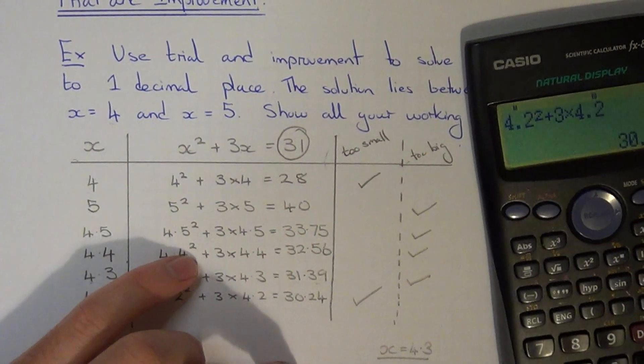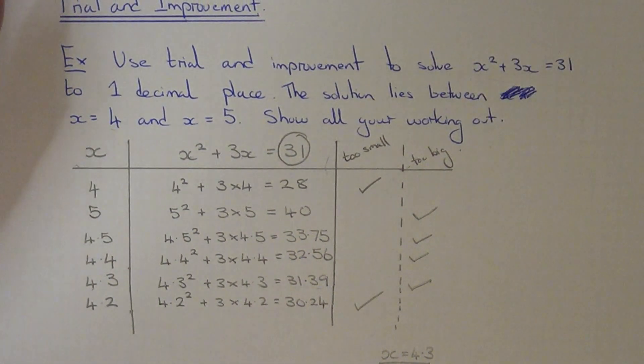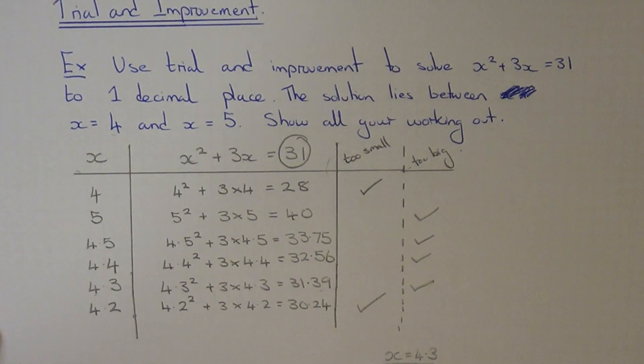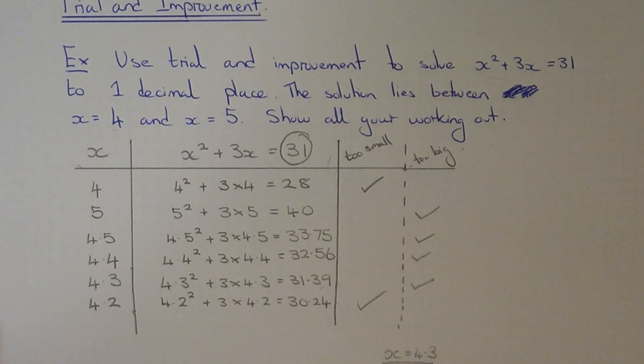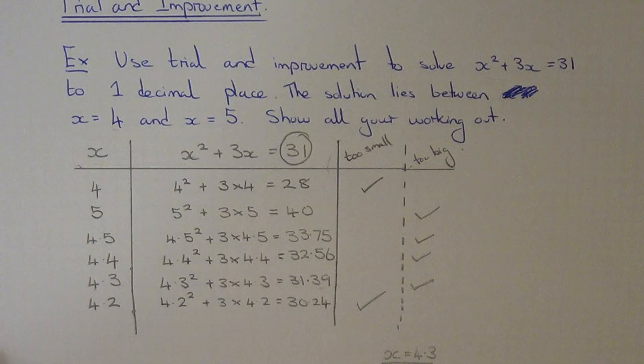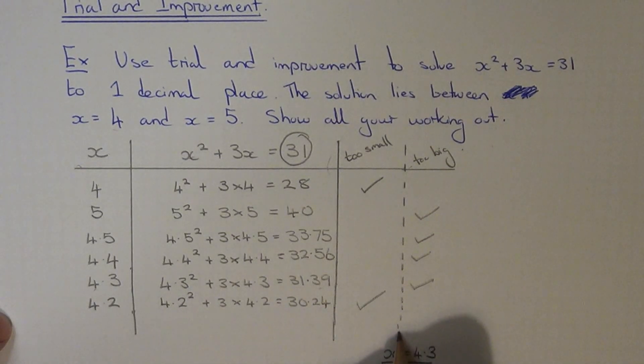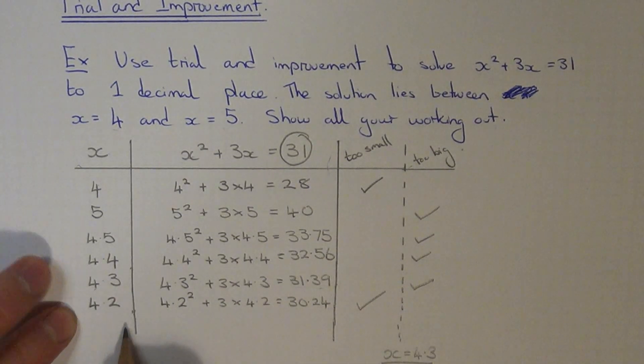However on some exam papers you will lose a mark because there's one final step you need to show. So what you need to do on your final step to get full marks for this question is to go in between the two which were closest to 31. So that's 4.2 and 4.3.